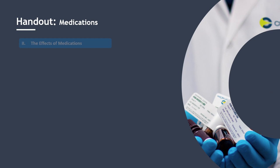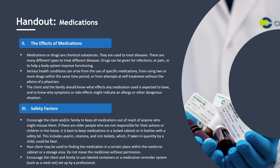The Effects of Medications: medications or drugs are chemical substances used to treat diseases. There are many different types to treat different diseases. Drugs can be given for infections, pain, or to help a body system improve functioning. Serious health conditions can arise from use of specific medications, from using two or more drugs within the same time period, or from attempts at self-treatment without physician advice. The client and family should know what effects any medication is expected to have and why symptoms or side effects might indicate an allergy or other dangerous situation.